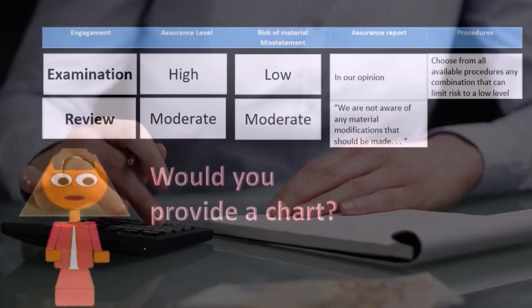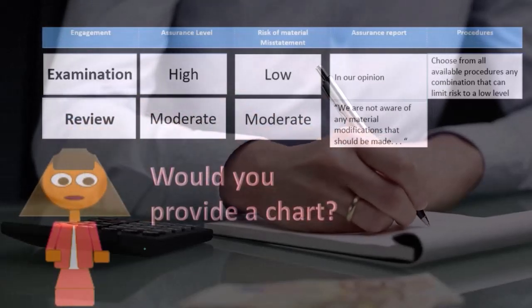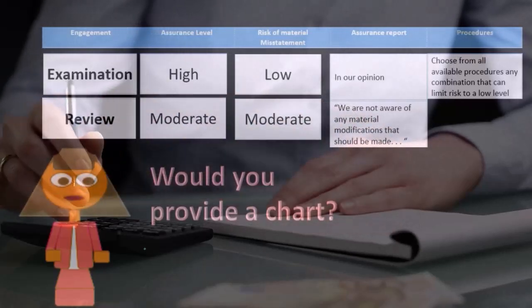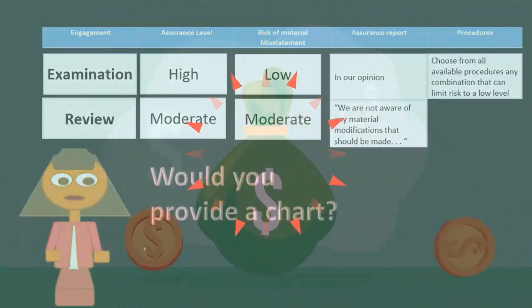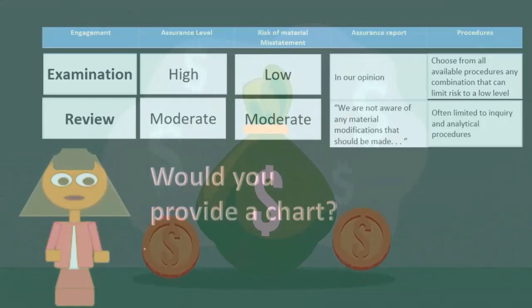We're giving a reviewed opinion there. Notice we're never going to say in the report that we guarantee anything, because that's legally not a smart thing to do as it could expose us to liability. In this case, we're saying we are not aware of any material modifications. It's often limited to inquiry and analytical procedures.